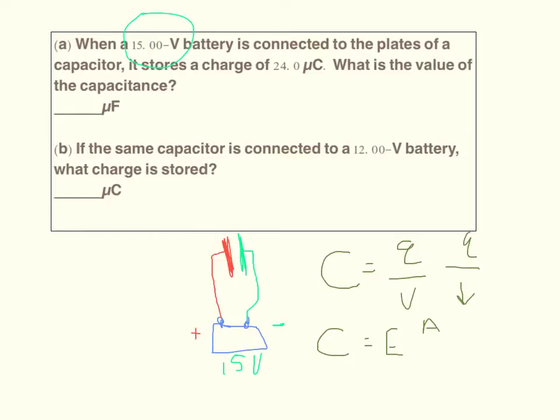So for a given capacitor, for this given capacitor, the area of the plates is constant and the distance is constant. So capacitance will stay the same regardless of what battery it's connected to.